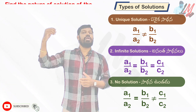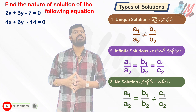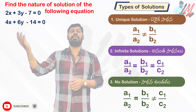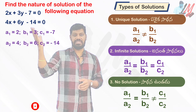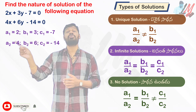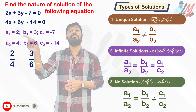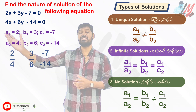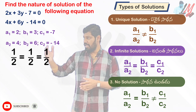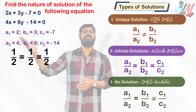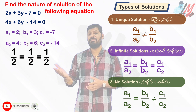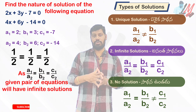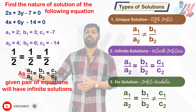Let me take one more example. Here is a unique solution case: 2x plus 3y minus 7 equal to 0 and 4x plus 6y minus 14 equal to 0. Comparing a1 by a2 gives 2 by 4 equals 1 by 2, b1 by b2 gives 3 by 6 equals 1 by 2, c1 by c2 gives minus 7 by minus 14 equals 1 by 2. Since a1 by a2 equals b1 by b2 equals c1 by c2, the given pair of equations will have infinite solutions.